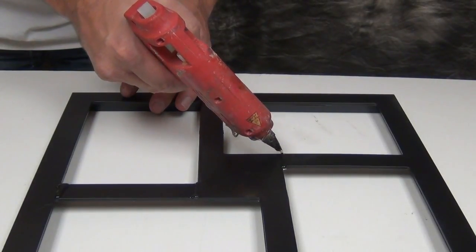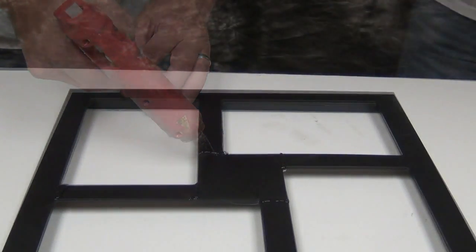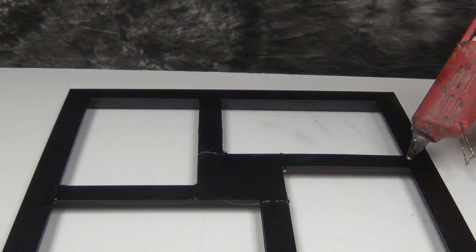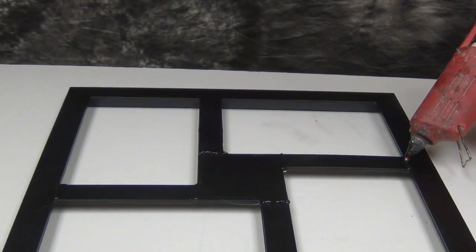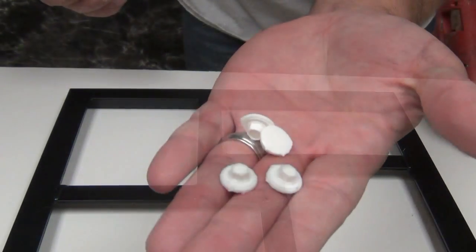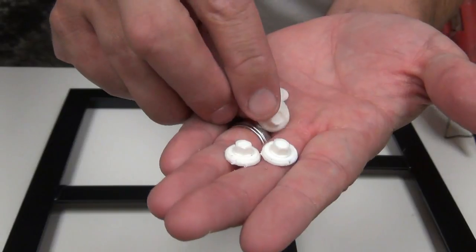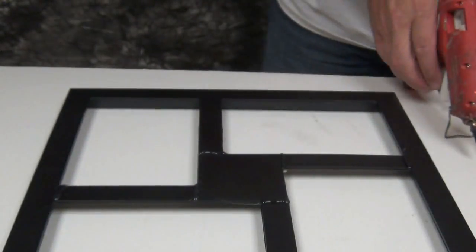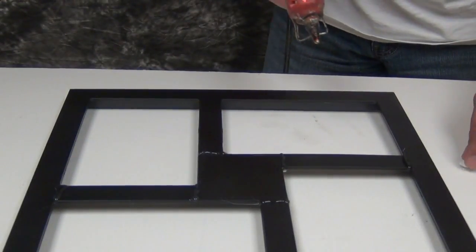In addition to our faux welds, we also want to add some hardware that appears to be sheet metal screws. For some strange reason, people associate bolts and screws with heavy metal, so we're just hot gluing some fake bolt heads on.